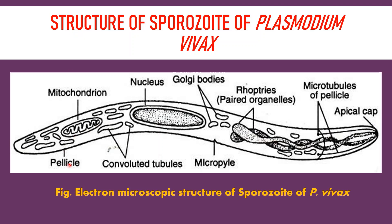The electron microscopic structure of the sporozoite was studied by Garnham, Bird, and Baker in 1963, which revealed its very complex structure. This sporozoite is about 11 to 12 microns in length and 0.5 to 1 micron in width.